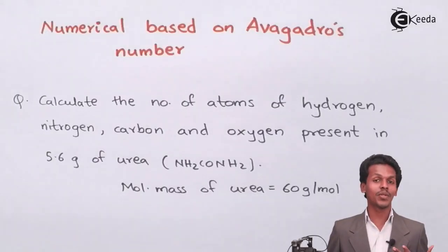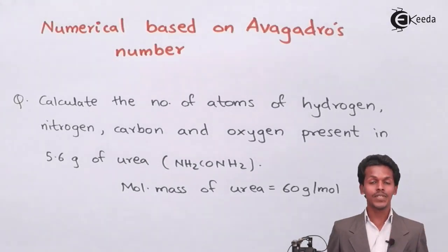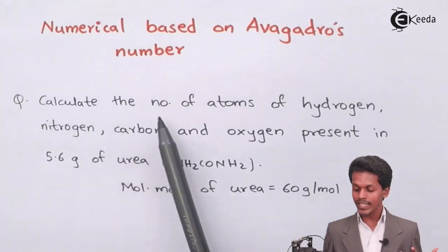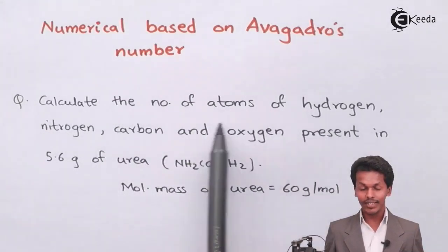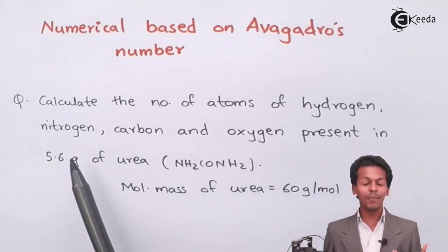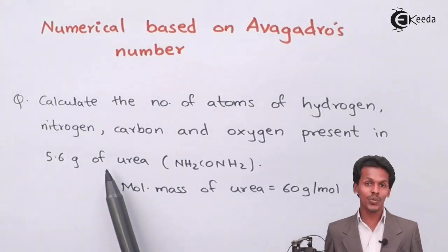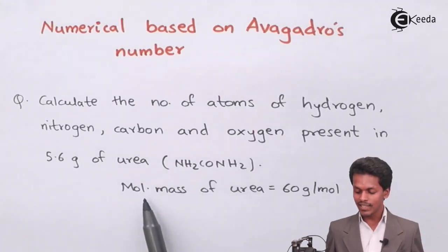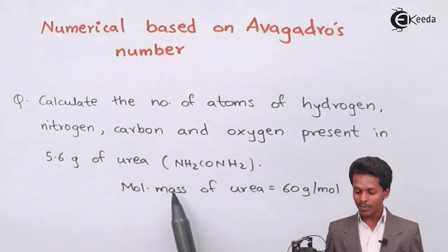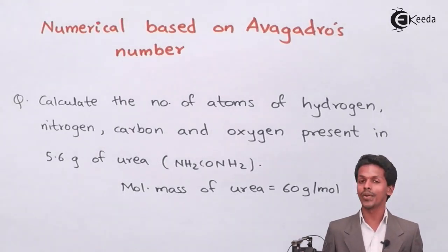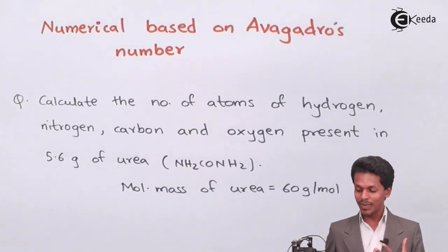This numerical is based on Avogadro's number. We have to calculate the number of atoms of hydrogen, nitrogen, carbon, and oxygen present in 5.6 grams of urea. The molecular formula of urea is given, and the molar mass of urea is also given as 60 grams per mole. From this, we have to estimate such data.